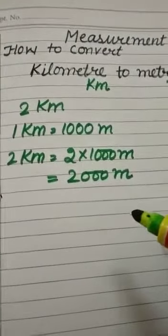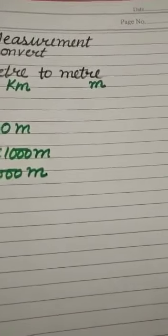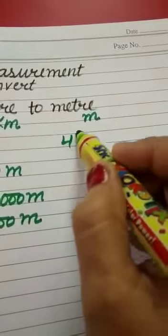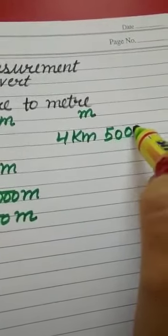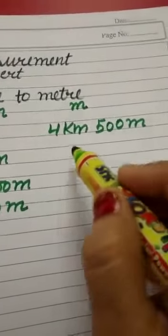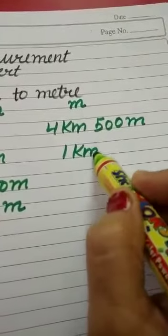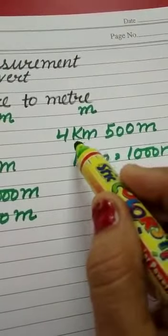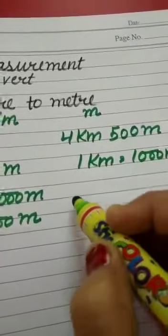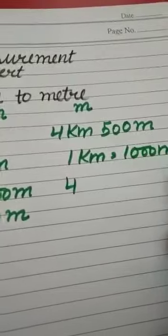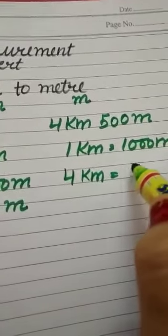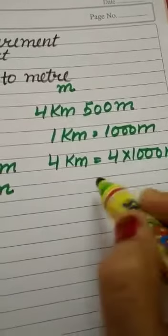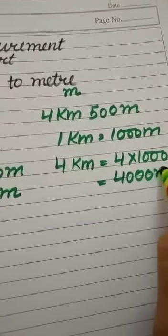Now I am taking one more sum related to this. In this sum, both kilometers and meters are given: four kilometers and five hundred meters. We have to convert this into meters. First, we convert the kilometers: one kilometer equals one thousand meters, so four kilometers equals four multiplied by one thousand meters, which gives us four thousand meters.